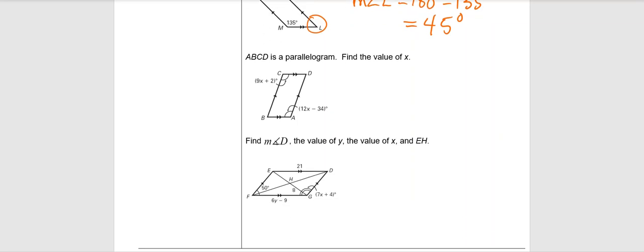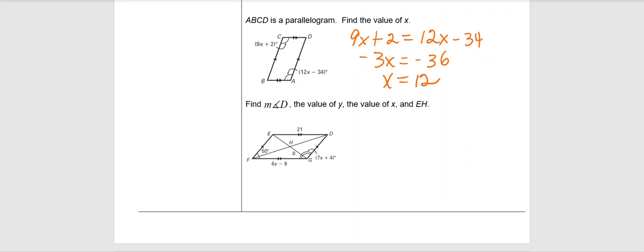The next one here says ABCD is a parallelogram. Find the value of X. What do we know about opposite angles? We know opposite angles in a parallelogram are congruent. So 9X plus 2 equals 12X minus 34. Solve for X. We'll get negative 3X equals negative 36, so X equals 12.